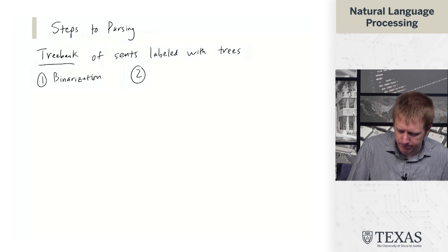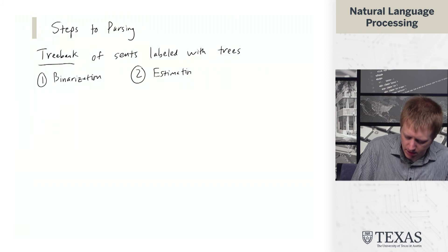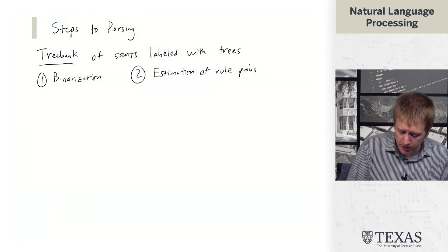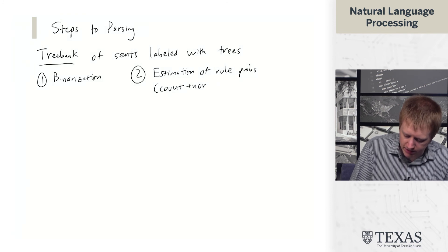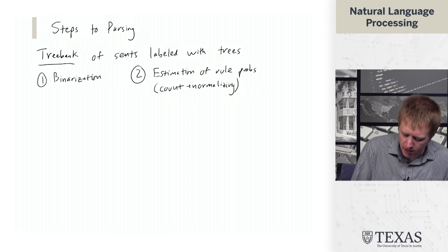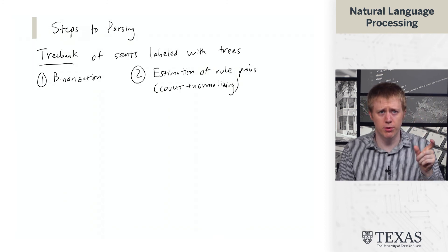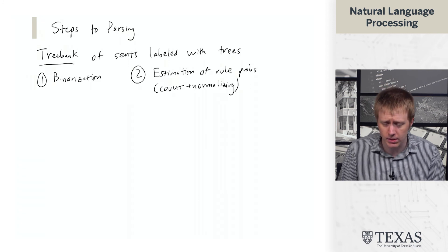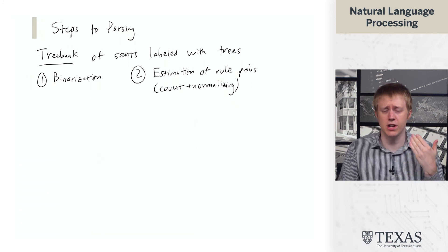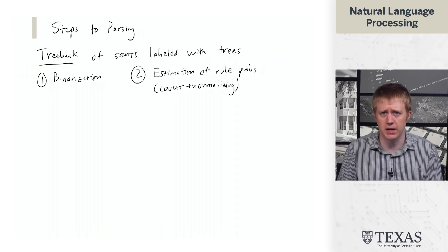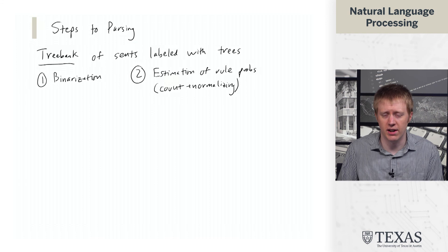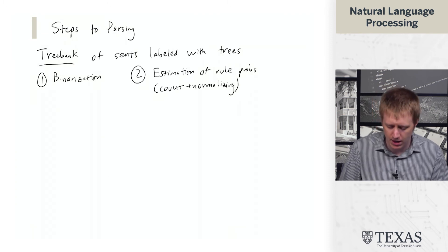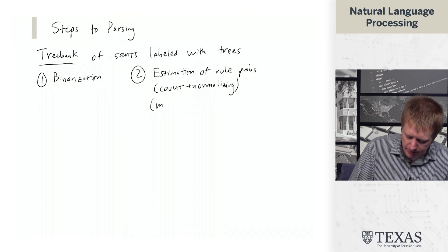The second step is estimation of rule probabilities. This step is very easy. It consists of counting and normalizing occurrences of different rules. For example, if we see noun phrase rewriting as this rule three times and this rule four times, you get probability three-sevenths with one rule and four-sevenths with the other. This falls out of the same generative multinomial model as hidden Markov models, so this process exactly corresponds to maximum likelihood estimation.